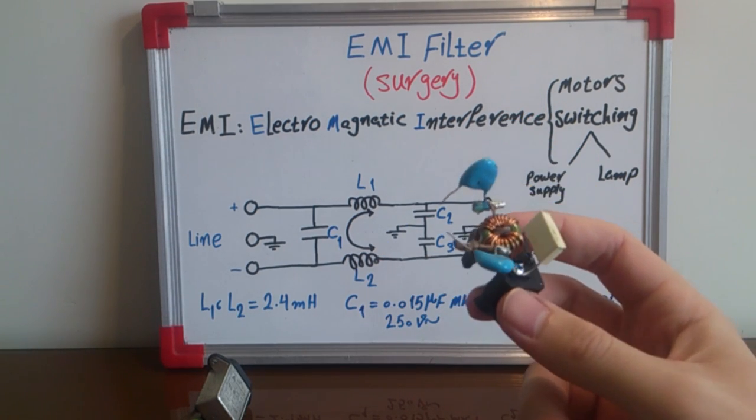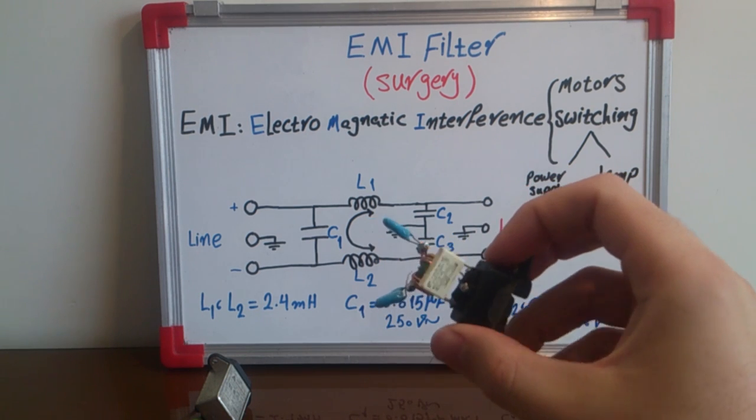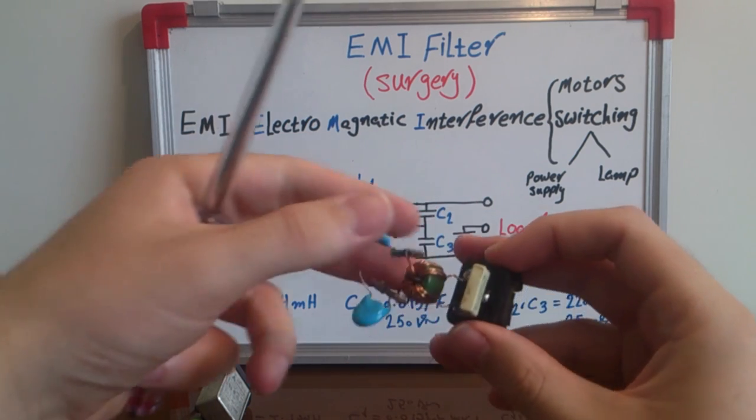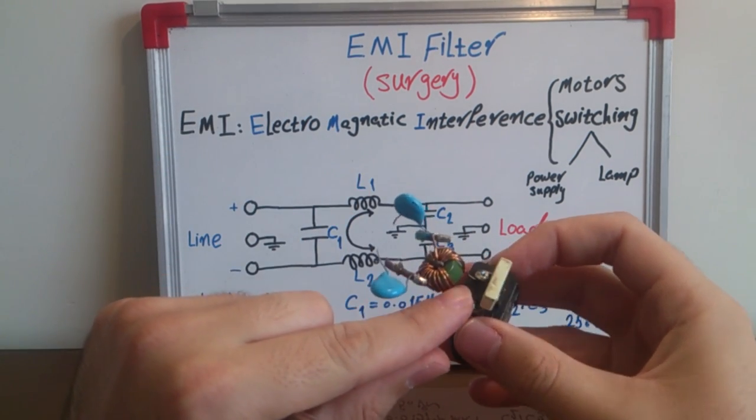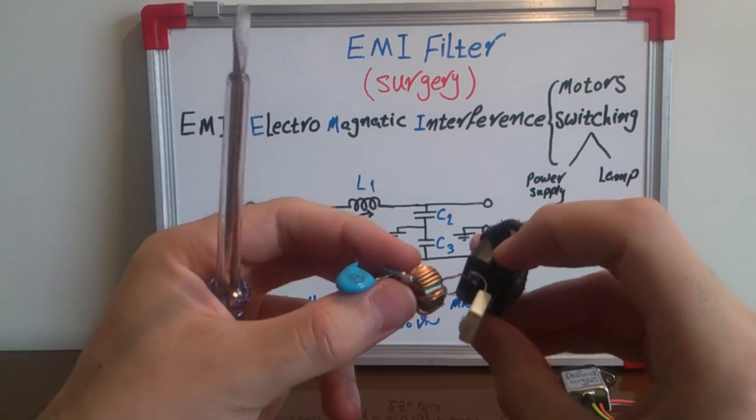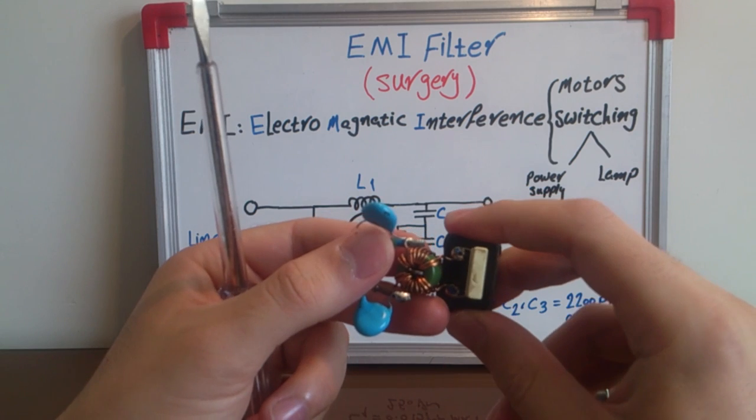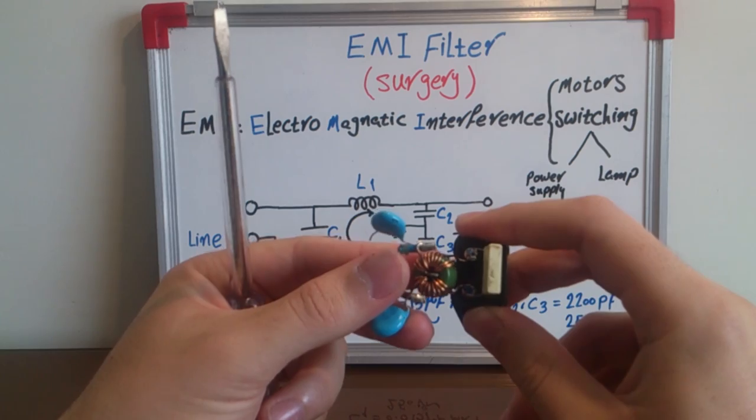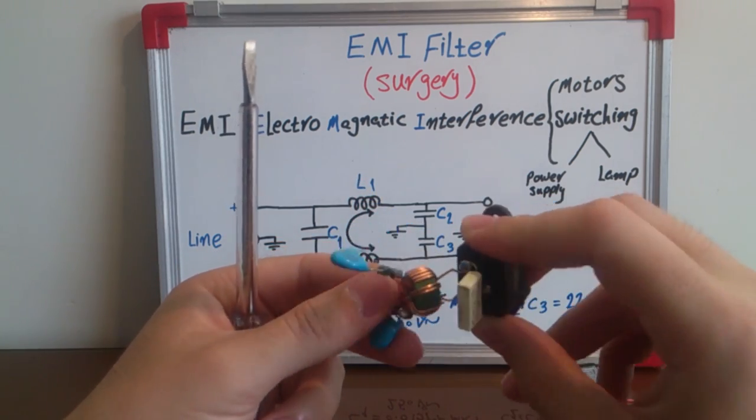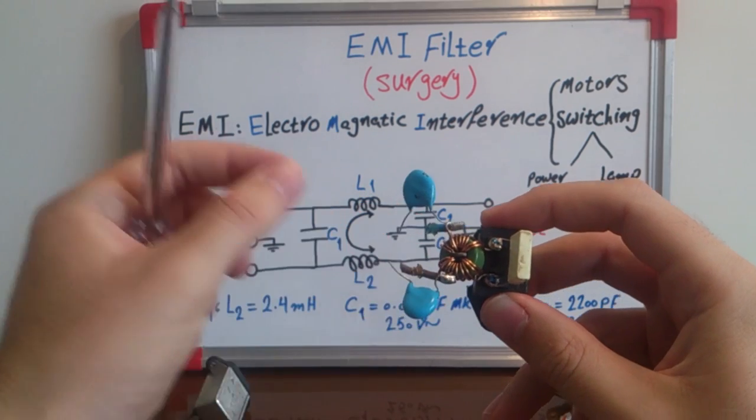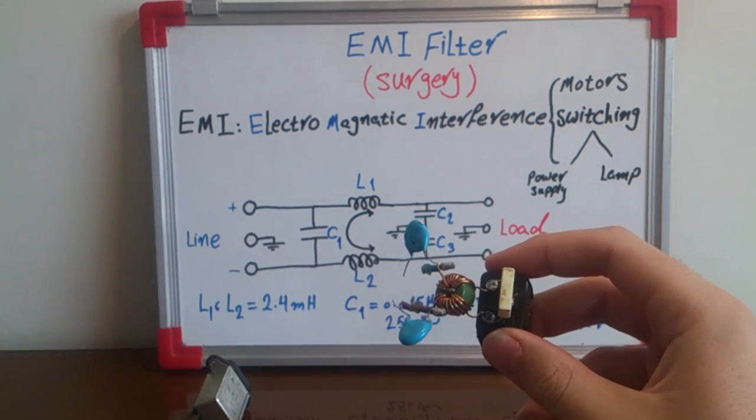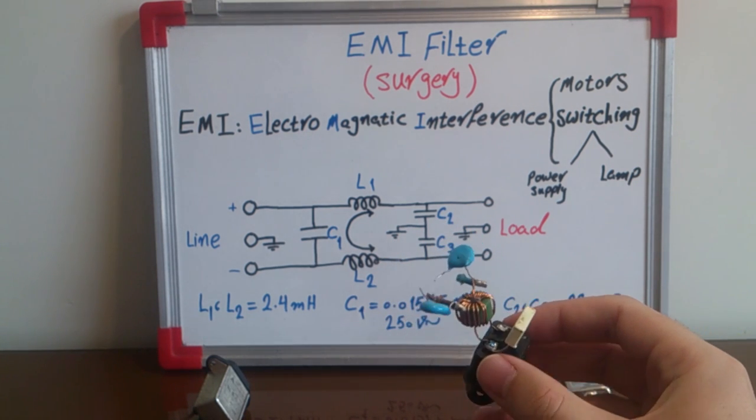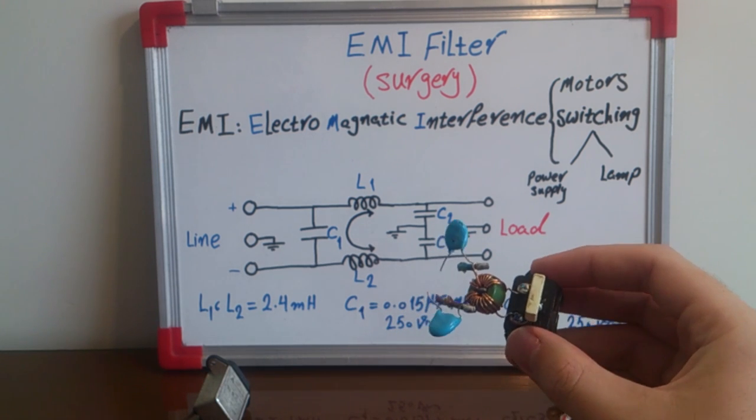When I need to increase this EMI filter current to provide for my load, I just need to change its wire. It's really easy. I think it's about 22 AWG wire, and I can use another wire with a bigger diameter and my output current easily increases.